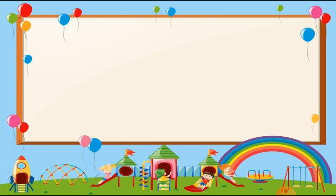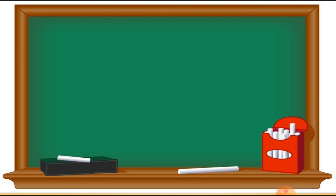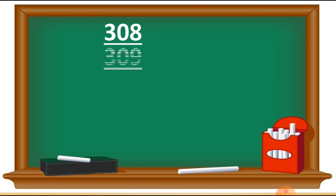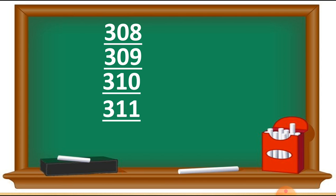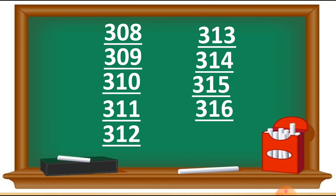Next: 308 to 317. Hope you understood how we write these numbers. Starting with 308: 308, 309, 310, 311, 312, 313, 314, 315, 316, and 317. Hope you understood this better.